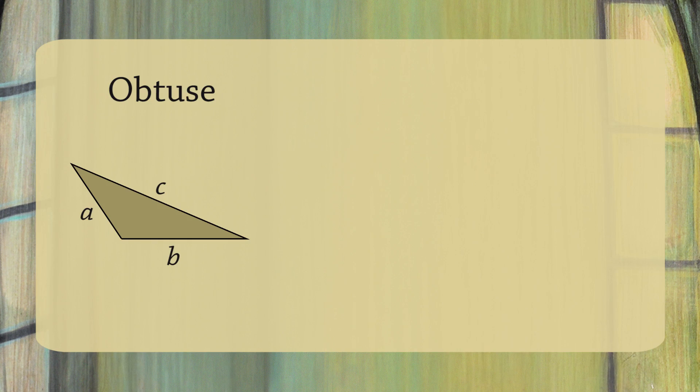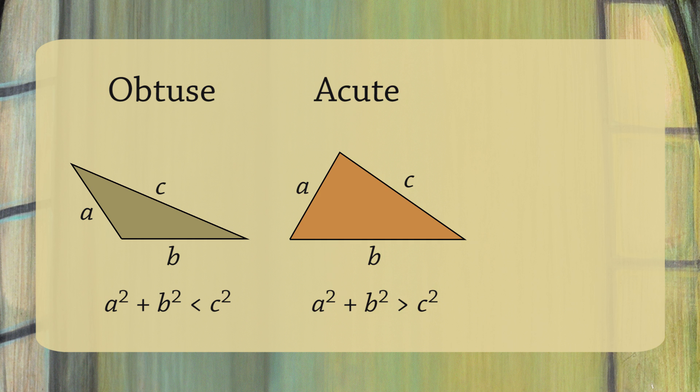I'd like to take a moment and stress that the Pythagorean theorem only works for right triangles. For an obtuse triangle, A squared plus B squared is less than C squared. If you have an acute triangle, then A squared plus B squared is greater than C squared. We only get A squared plus B squared equals C squared when it's a right triangle.